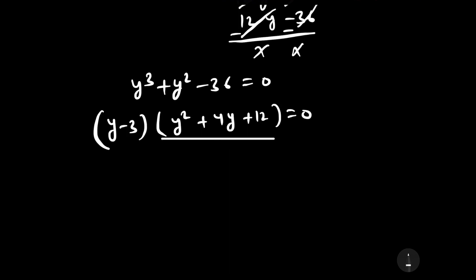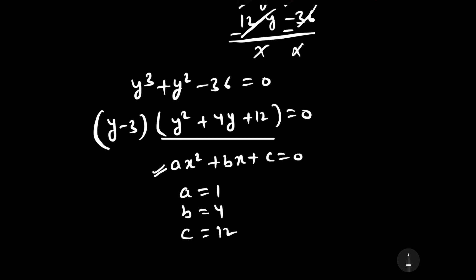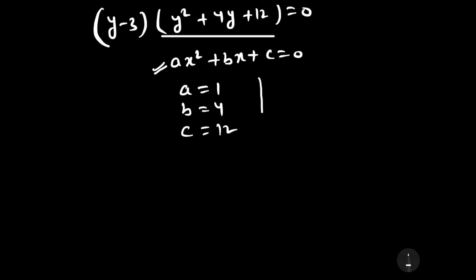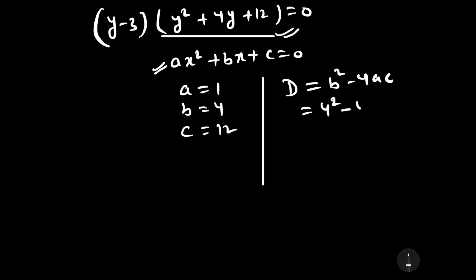Now let us compare y squared plus 4y plus 12 with the standard quadratic equation ax squared plus bx plus c equal to 0. By comparing, we get a equal to 1, b equal to 4, and c equal to 12. We want to check whether this quadratic can be factorized further. Let us check the discriminant: D equals b squared minus 4ac equals 4 squared minus 4 times 1 times 12, which equals 16 minus 48, equal to minus 32.